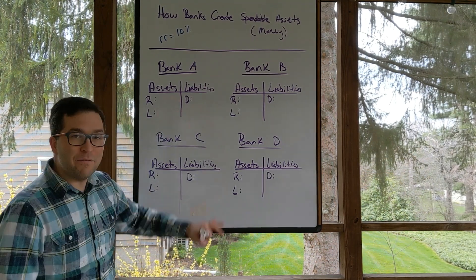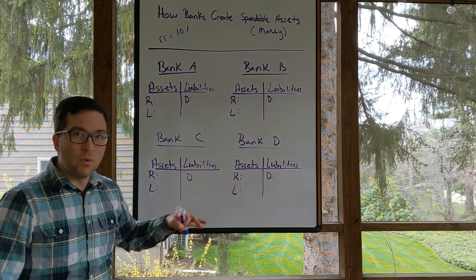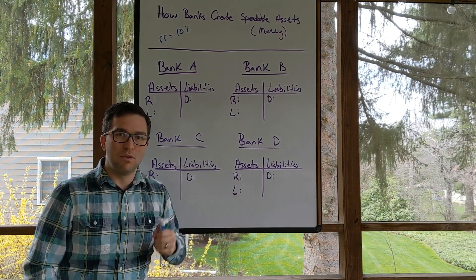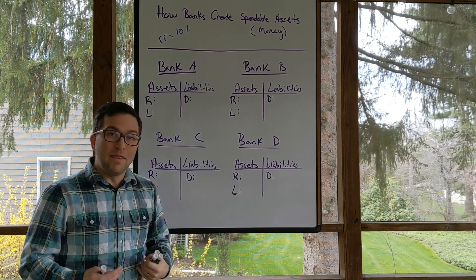Up here you can see we have the framework set. We have four different banks. We're going to show that if we deposit something into Bank A, how it gets multiplied through the system.